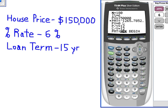And what that does is it gives us this negative $1,265.79. And so that's going to be our monthly payment to pay off this $150,000 loan over 15 years at 6% interest rate.